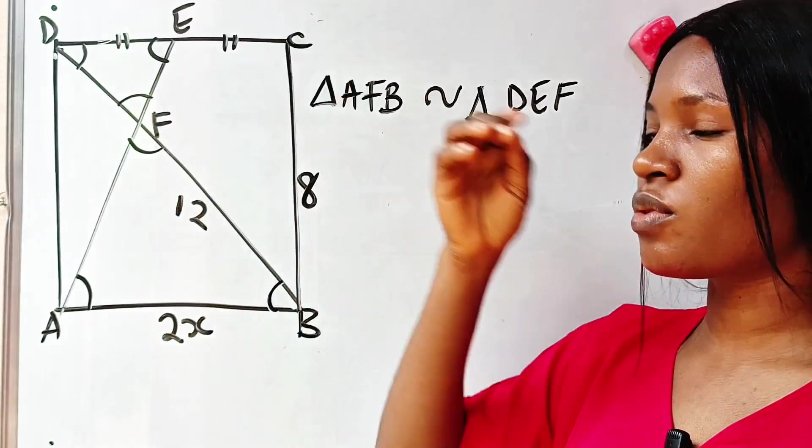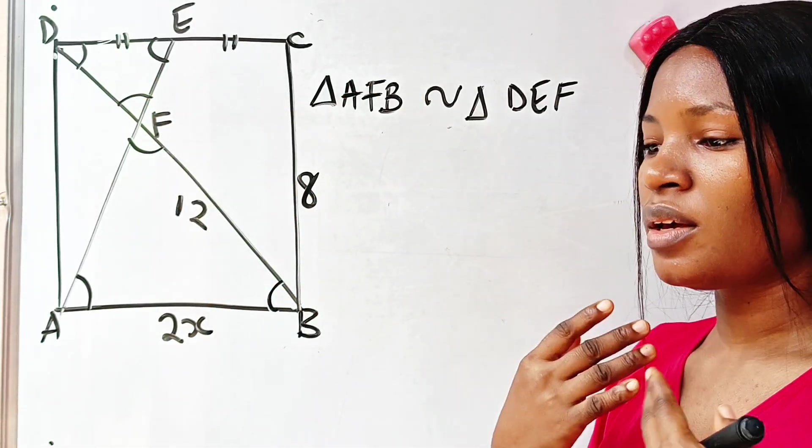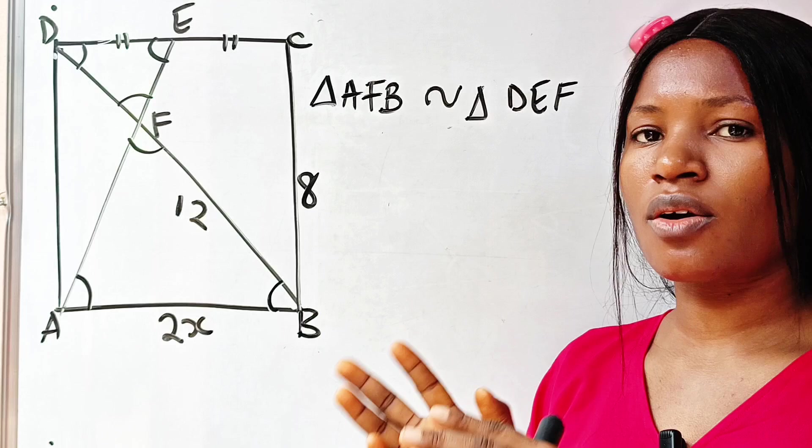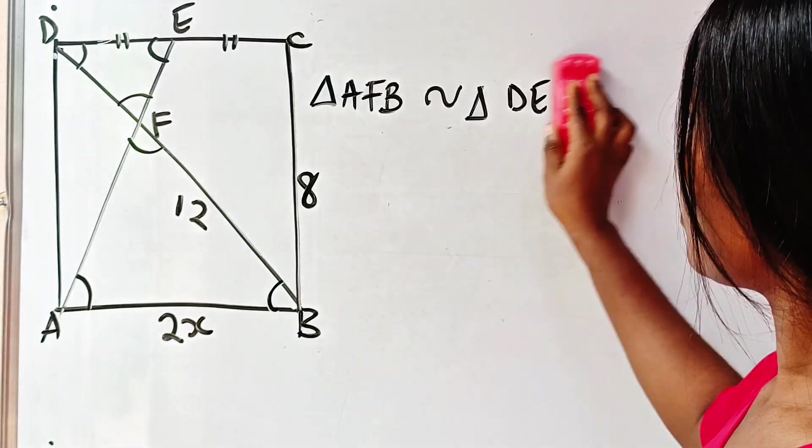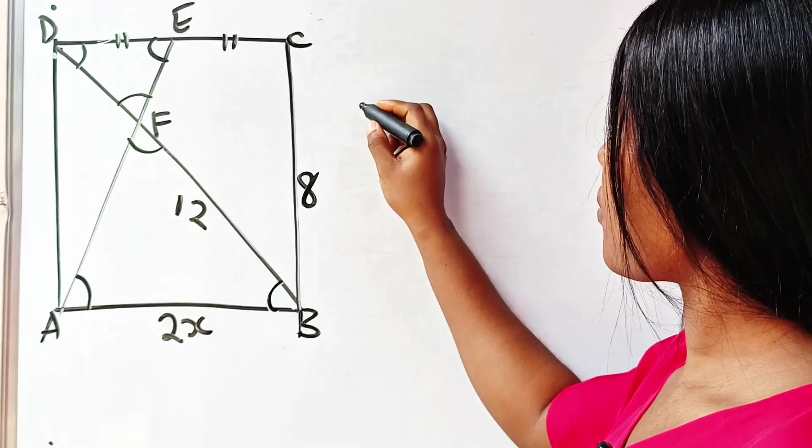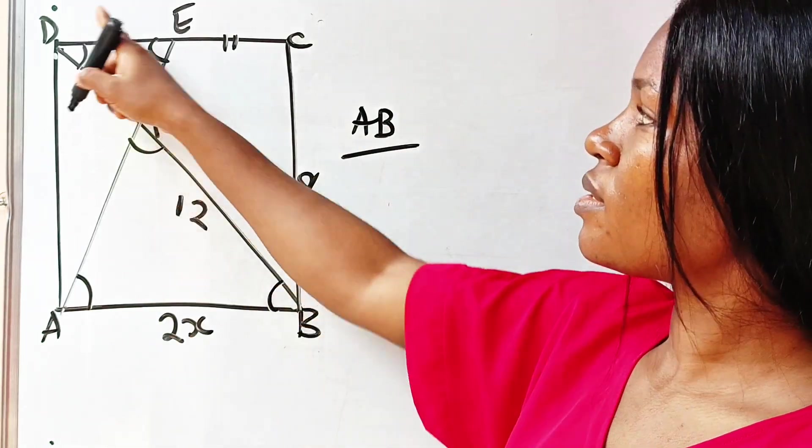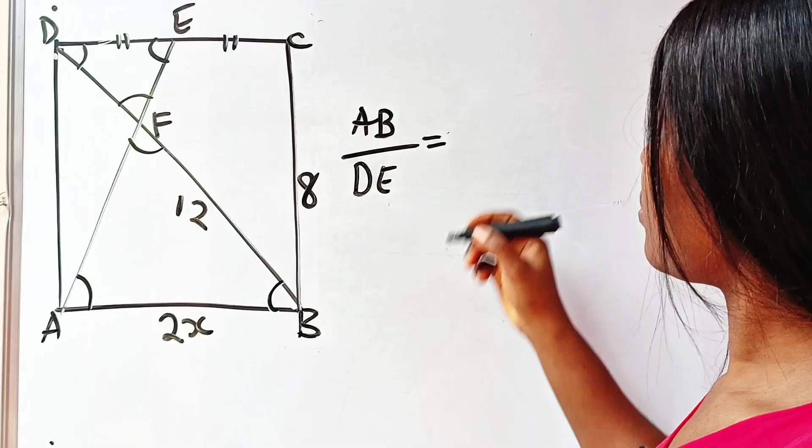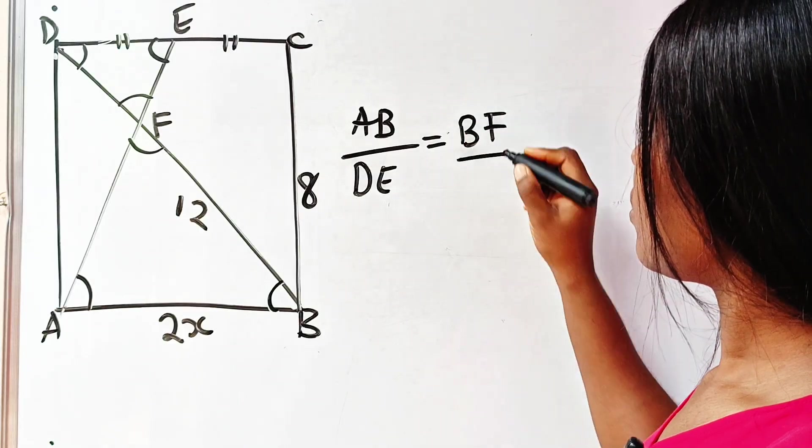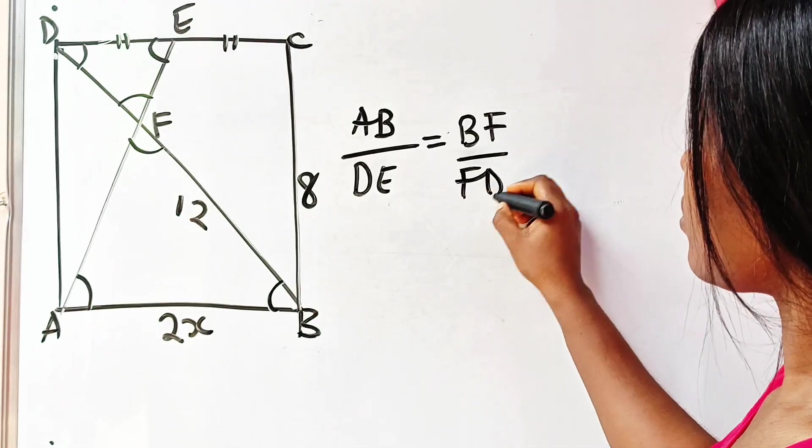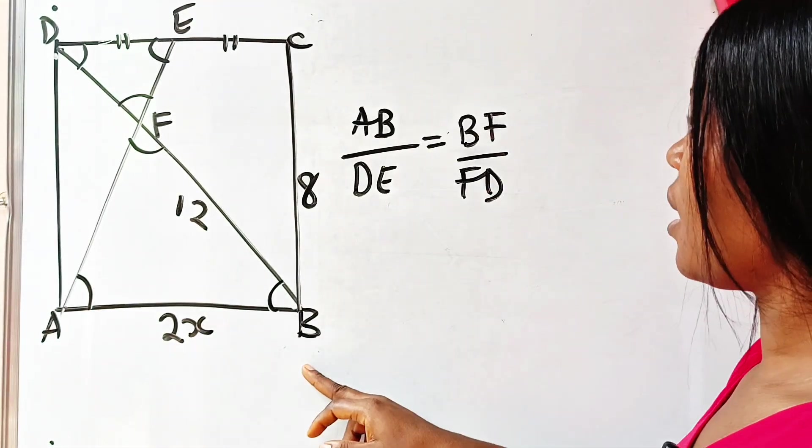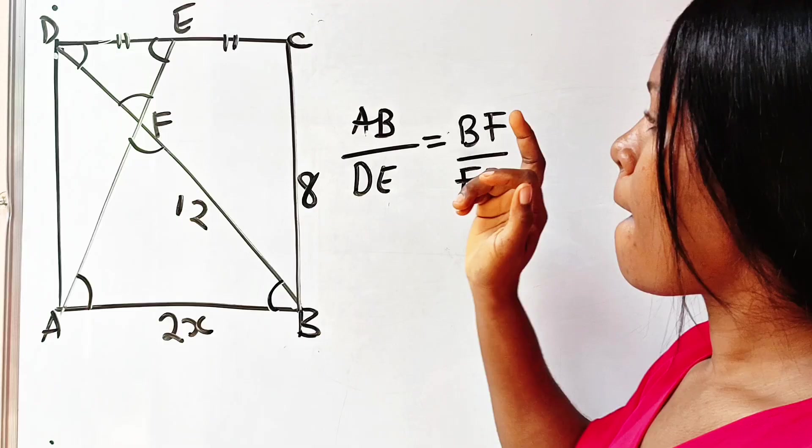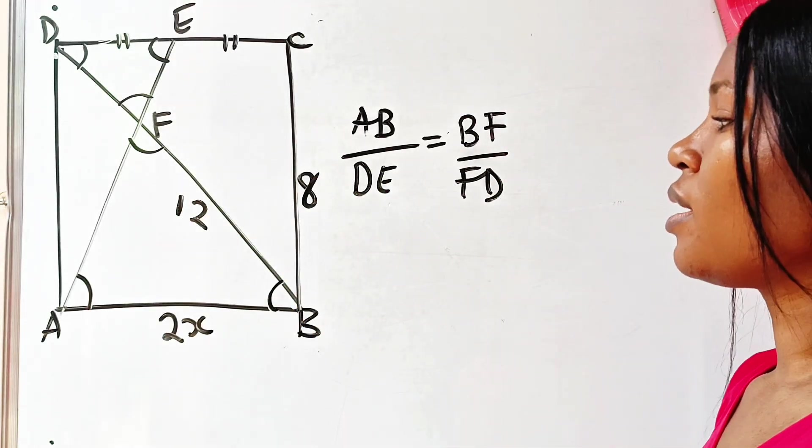These two triangles are similar, and when two triangles are similar, the ratio of their corresponding sides are equal. So if we say AB corresponds to DE, it should be equal to BF over FD. So AB over DE should be equal to BF over FD.